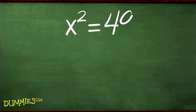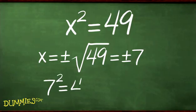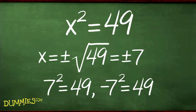Here are a few examples. Let's solve for x in x squared equals 49. Using the square root rule, x equals plus or minus the square root of 49, which equals plus or minus 7. This checks out because 7 squared equals 49 and minus 7 squared also equals 49.